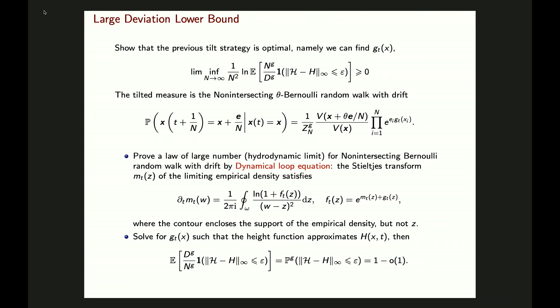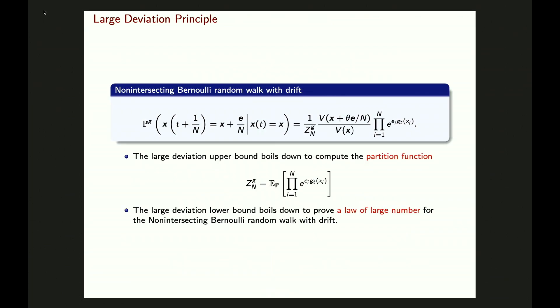In summary, for both the large deviation upper and lower bounds, the upper bound reduces to computing the normalization constant — the denominator — which is the product of e^(eᵢ · gₜ(xᵢ)), exactly the normalization constant for the non-intersecting Berlouli walk with drift. The lower bound reduces to proving a law of large numbers for those non-intersecting Berlouli walks. Both are proved through the dynamical loop equation. I'll focus next on how to prove the law of large numbers using the dynamical loop equation.